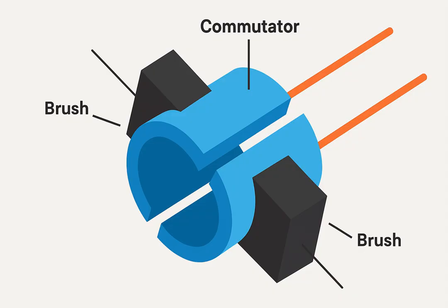The commutator and brushes work together to keep the motor spinning smoothly. The commutator is a split metal ring attached to the rotor. The brushes are stationary carbon contacts pressed against the commutator using springs. As the rotor spins, the brushes make contact with different commutator segments, reversing the current in the rotor coils. This keeps the magnetic poles flipping and the rotation going in one direction.